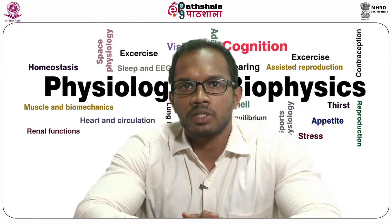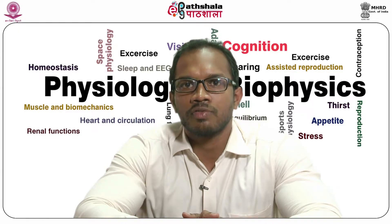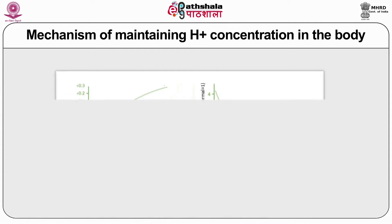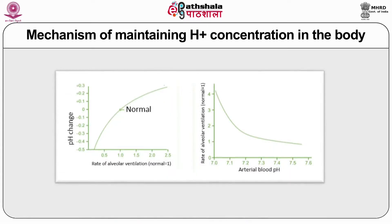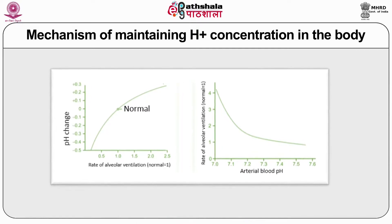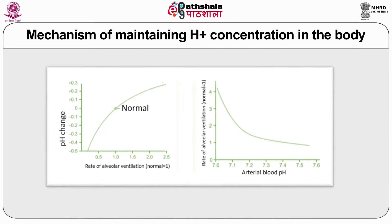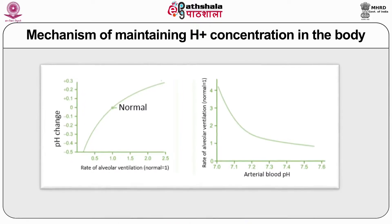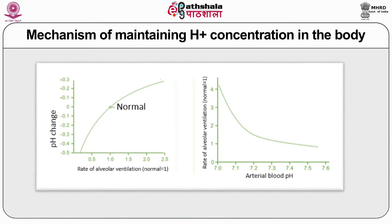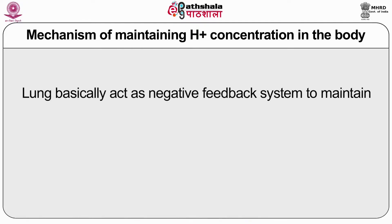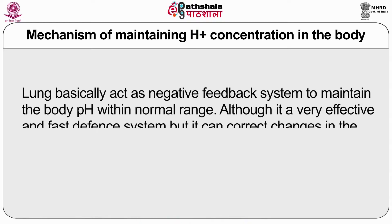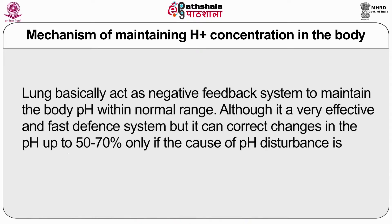Ventilation affects the extracellular pH, but pH also affects the rate of respiration. pH can increase ventilation up to 4 to 5 times if the pH of the body falls from 7.4 toward 7. The lung basically acts as a negative feedback system to maintain body pH within normal range. Although it is a very effective and fast defense system, it can only correct changes in pH by 50 to 70% if the pH disturbance is extra-pulmonary.